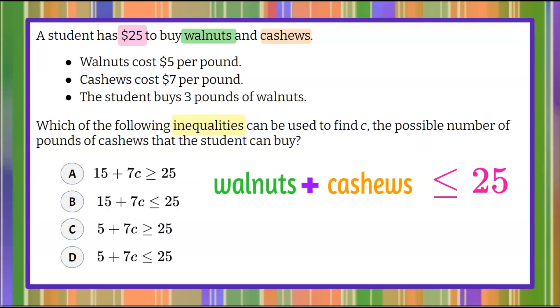So it can be equal to $25, but it cannot be greater than $25. They do not have enough money. So now let's look at our answer choices. We know that we can eliminate answer choice A because it is greater than or equal to $25. There's not enough money.